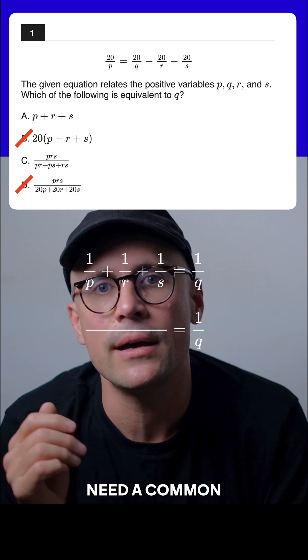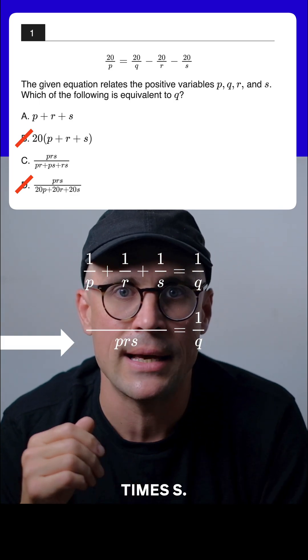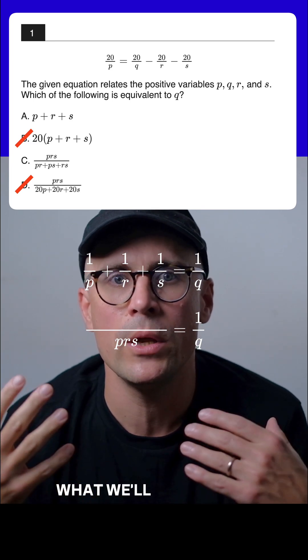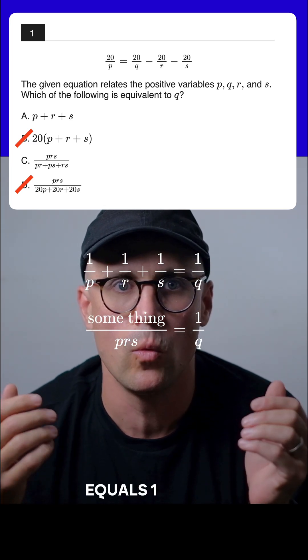We're clearly going to need a common denominator here to combine these fractions, which will be p times r times s. And once that's done, what we'll get will be something over prs equals 1 over q.